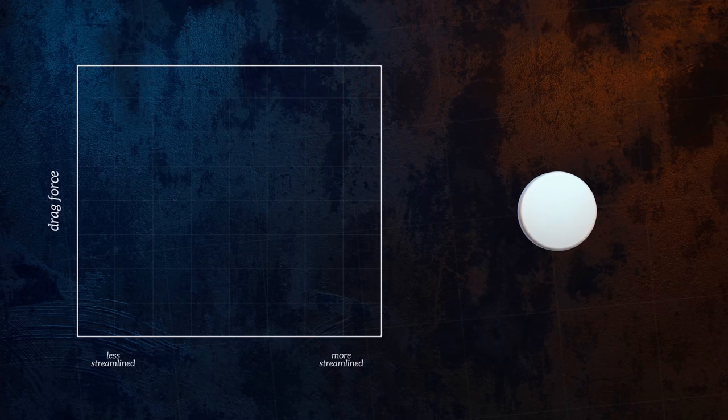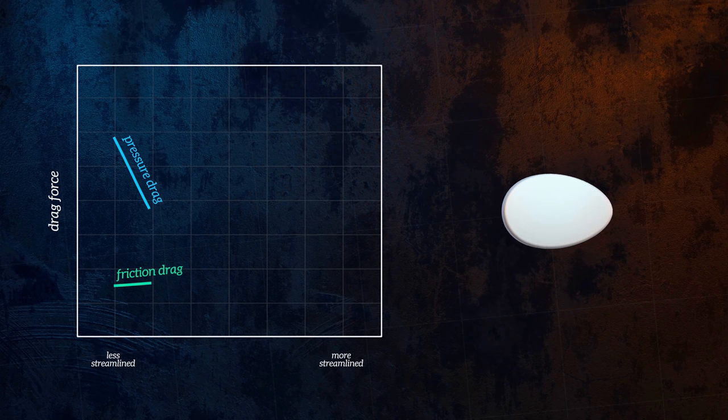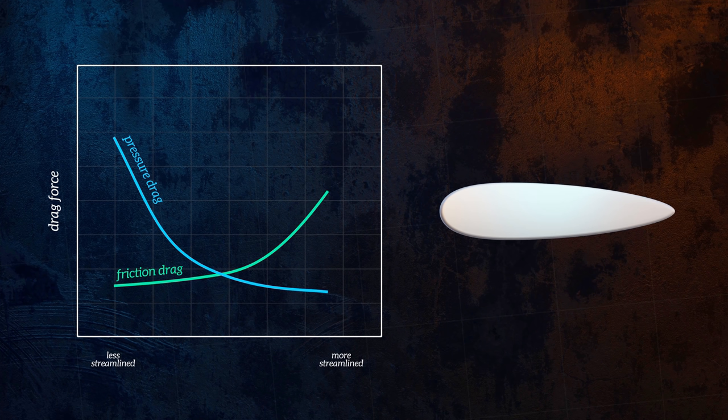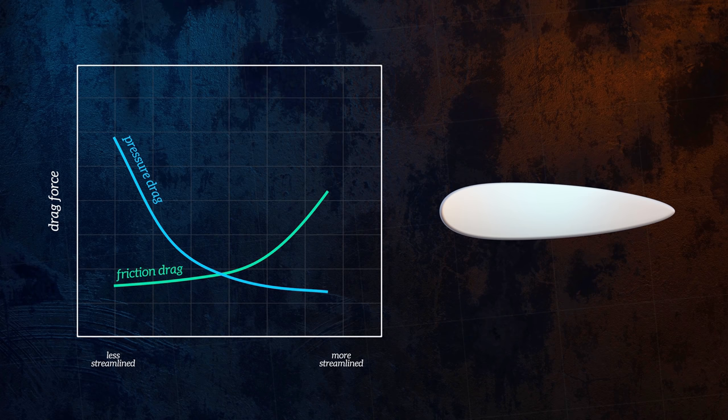When streamlining a body to reduce drag, it's important to remember that friction drag will increase as the pressure drag reduces. And so these two aspects need to be carefully balanced. The shape that has the smallest total drag force won't necessarily be the one that is most streamlined.